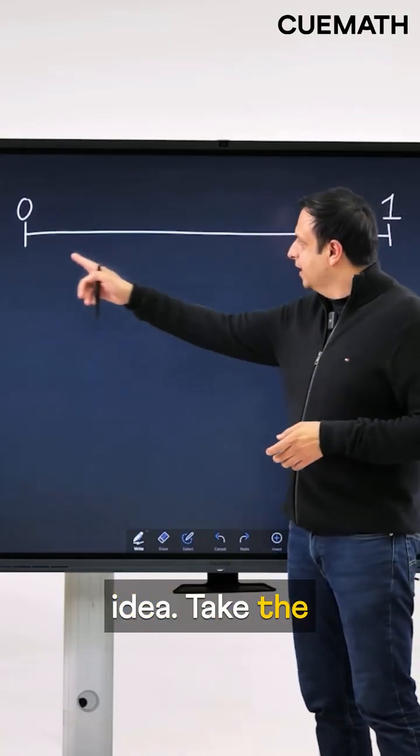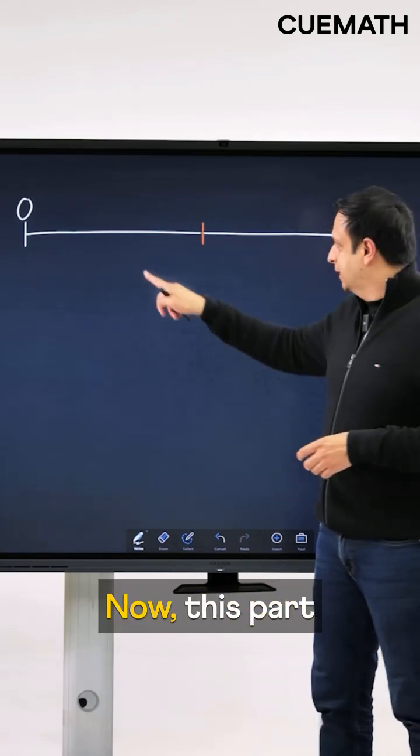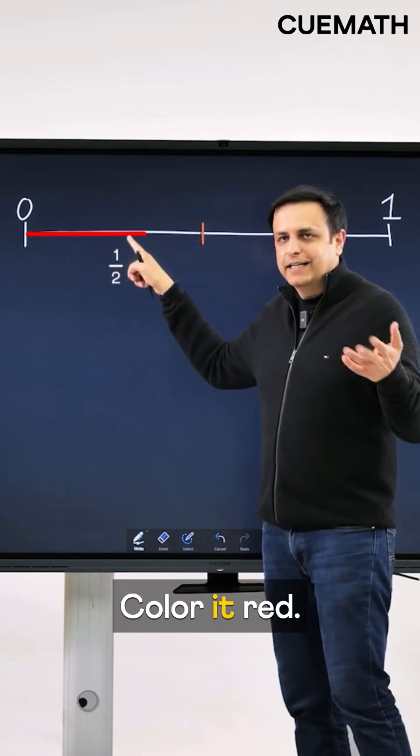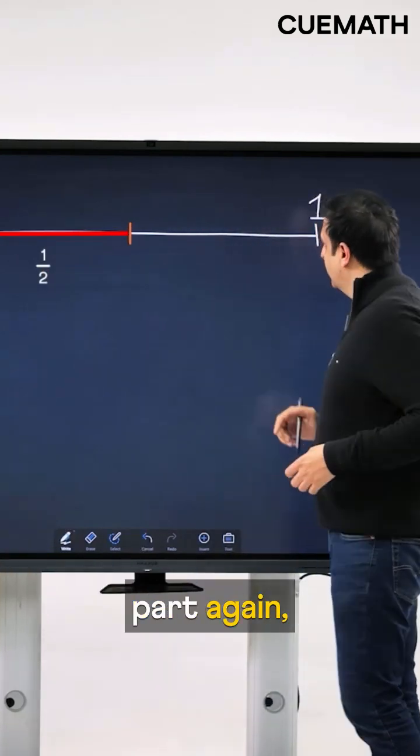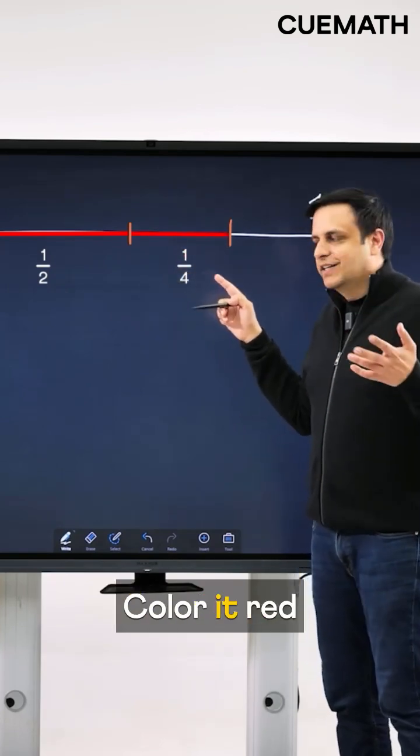Here's our first idea. Take the interval from 0 to 1 and divide it into two equal parts. Now this part is 1 over 2, color it red. Take the remaining part, again divide it into two equal parts. Now this part would be 1 over 4, color it red again.